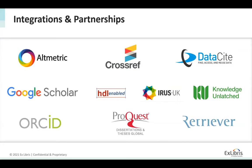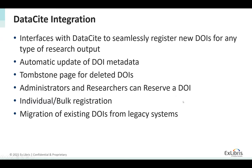In Exploro, we interface with DataSite to seamlessly register new DOIs. This can be done for any type of research output — data sets, publications, creative works, patents, all kinds of things. Exploro itself is not a DataSite member and we're not working with our own prefixes. We're using the customer's account and just interfacing to make the process easier to register those DOIs. This includes both creating new DOIs and automatic update of the DOI metadata as records change in Exploro.